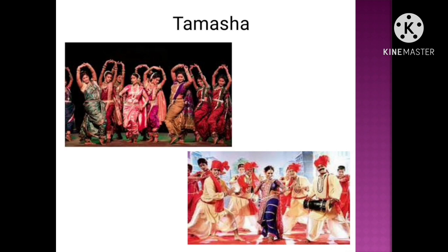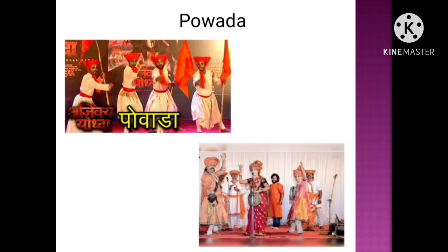Tamasha: The origin of the word tamasha is in the Persian language and it means a pleasing sight. It evolved from a amalgamation of folk theater and classical arts. There are two types of tamasha traditions: Sangeetbari and Dholkicha Furd. Dance and music are given more importance than drama in Sangeetbari, whereas drama is the main part in Dholkicha Furd. It begins with a gun — praising the lord — followed by gaulana, and the vag is presented in the second part. Examples of modern tamasha include Vicha Maji Purikara and Gadyache Lagna.